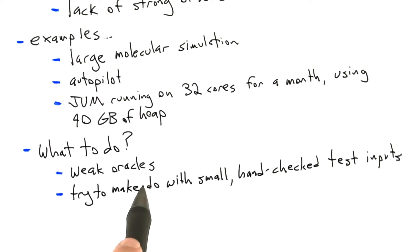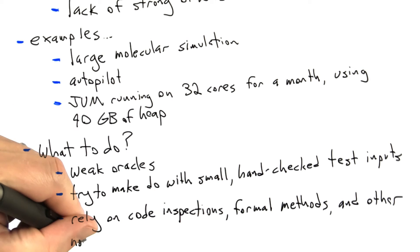We can try to bootstrap some degree of confidence in the software under test by taking small test inputs for which we've hand-checked the output and trying to argue that, for example, somehow the autopilot, if it responds well for these inputs, also responds well for other test inputs.